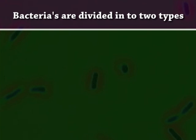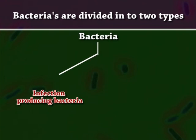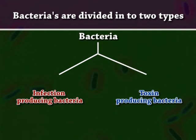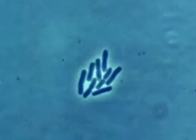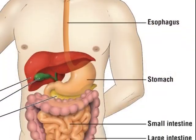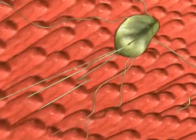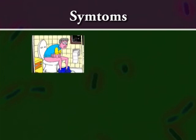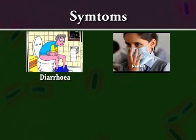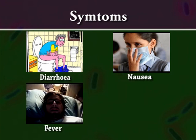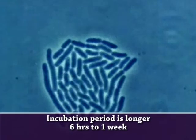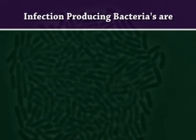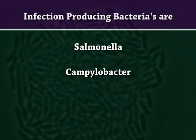Bacteria are divided into two types: infection-producing bacteria and toxin-producing bacteria. Infection-producing bacteria multiply on food or in the stomach and intestines, damaging the lining of the intestine. Symptoms may include diarrhea, nausea, fever or abdominal pain. The incubation period is longer — from six hours to one week. Examples include Salmonella, Campylobacter and Shigella.